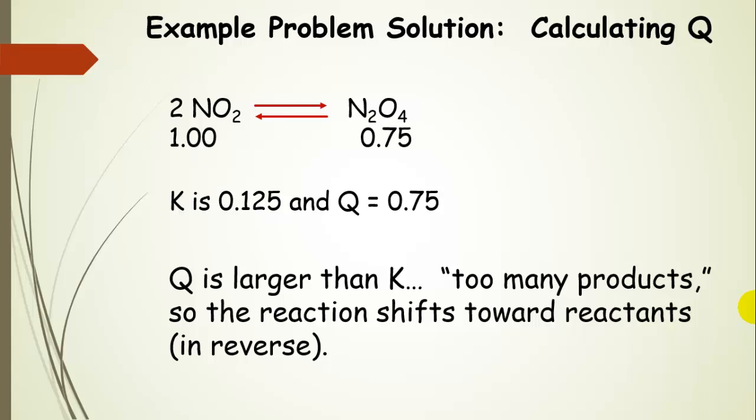So that means the reaction is going to shift toward reactants. It's going to go in reverse. So it's going to use up dinitrogen tetraoxide to make more nitrogen dioxide in order to get to equilibrium.